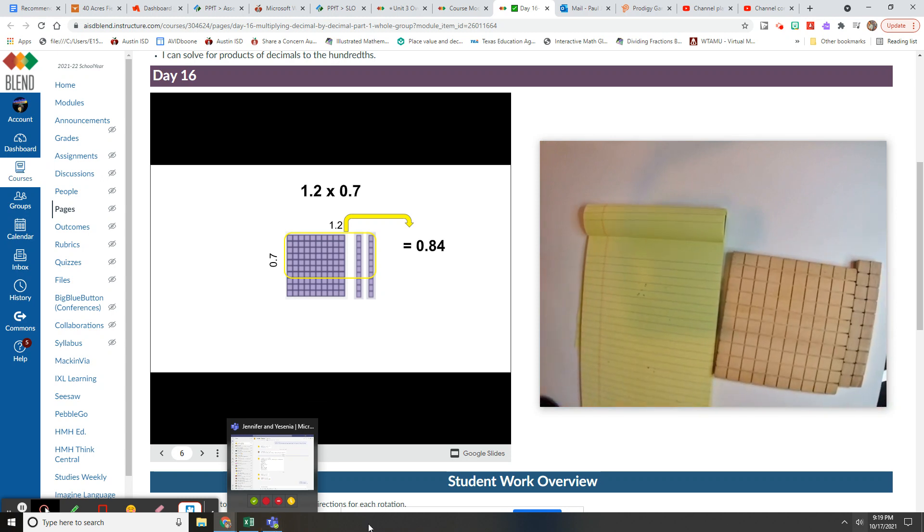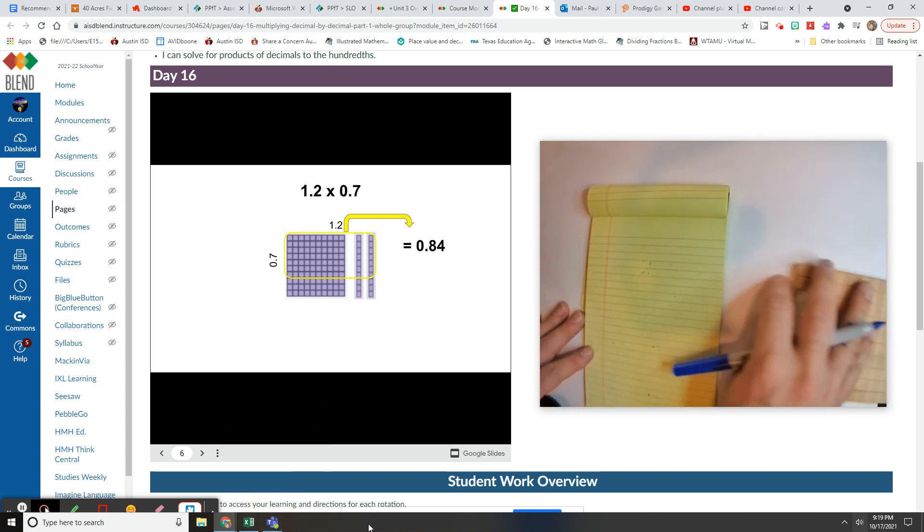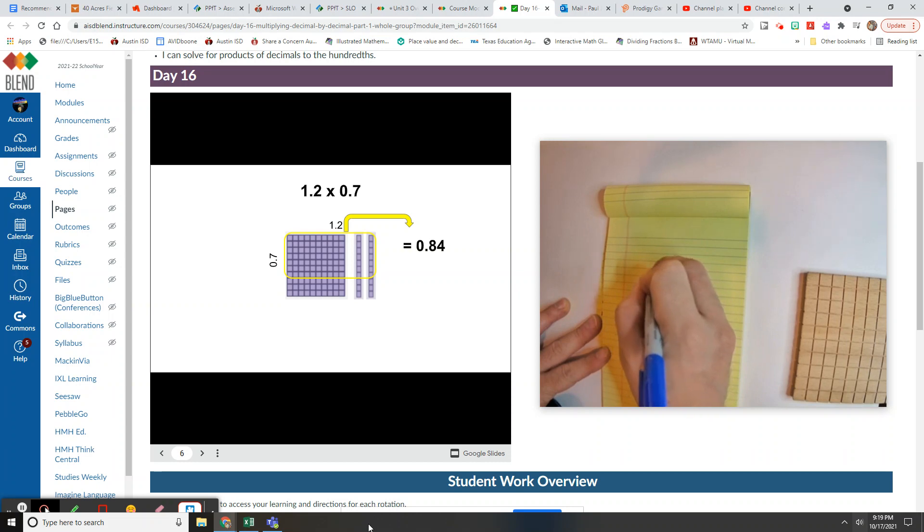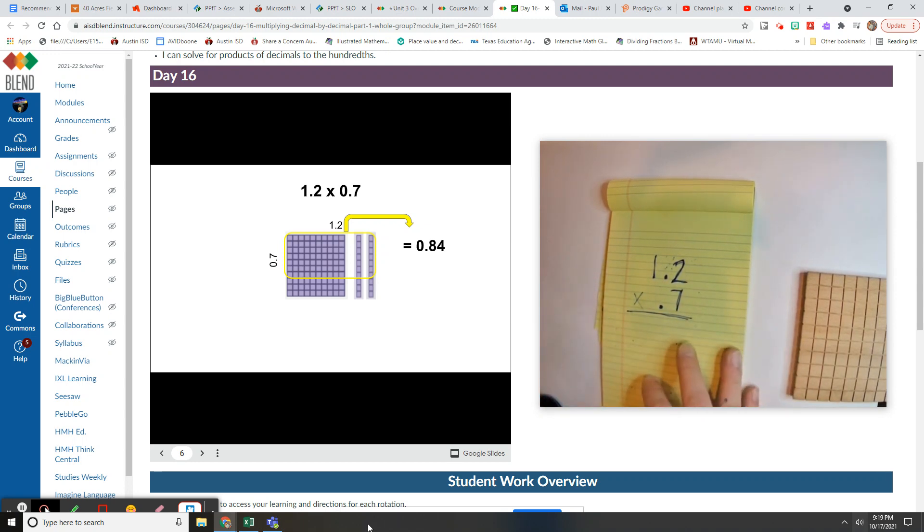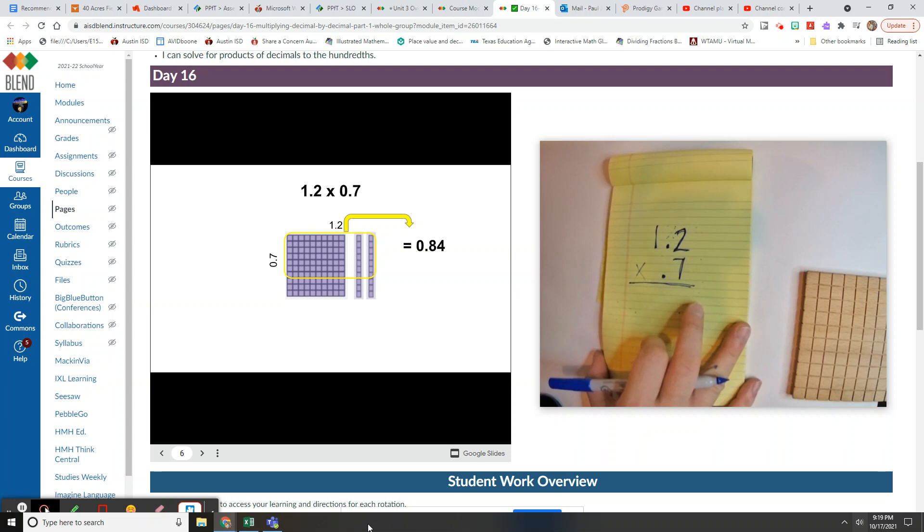So let's set it up. We have 1.2 times 0.7. I'm going to take off the zero because remember, all that zero is going to do is give me another step, but it does not change the value of my answer. In this situation, the decimal points and place values randomly lined up. I didn't do anything to line those up - that's just the way it goes.